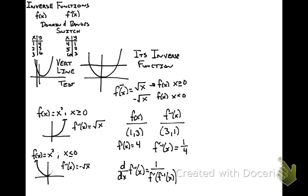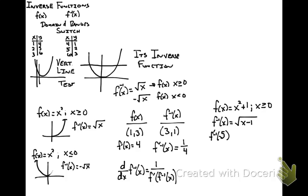Let's look at an example. We're given f of x equals x squared plus 1, a quadratic, and we're only focusing on x greater than or equal to 0 so that it has an inverse. The inverse in this case is the square root of x minus 1. We'd like to know the value of the derivative of the inverse at 5. Note that 5 is an input to the inverse, which means it's an output in the original function.